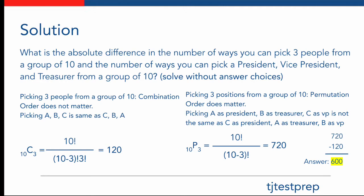Versus the second half of this question, where we are picking three positions from a group of ten people, which is known as a permutation. Here, order does matter. For instance, if we pick person A as president, person B as treasurer, and person C as vice president, it is not the same as person C being the president, person A being treasurer, and person B being the vice president.